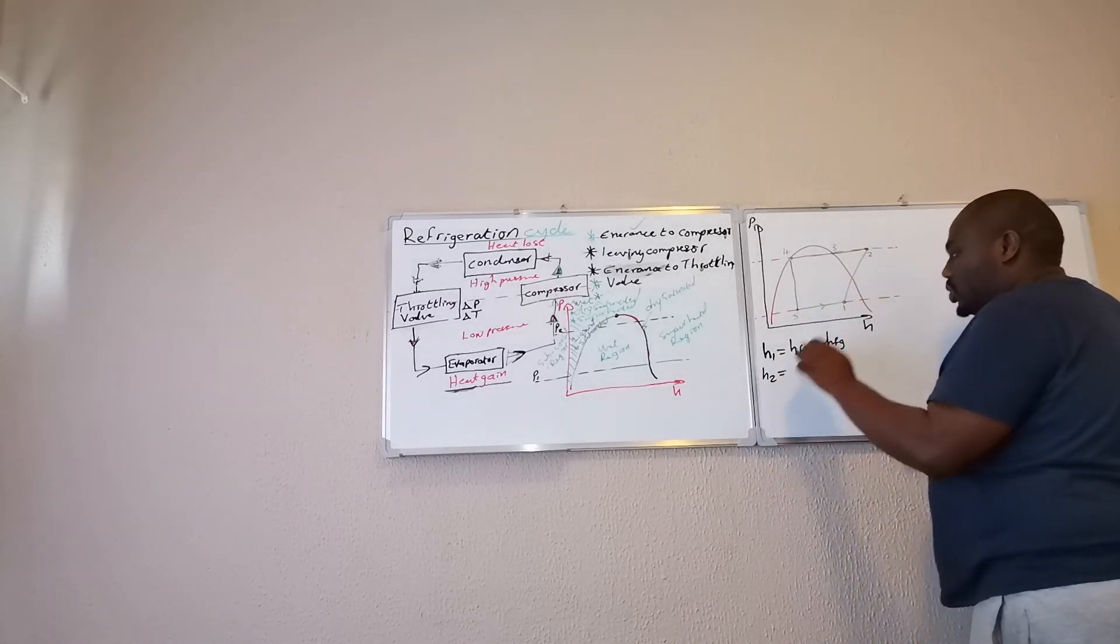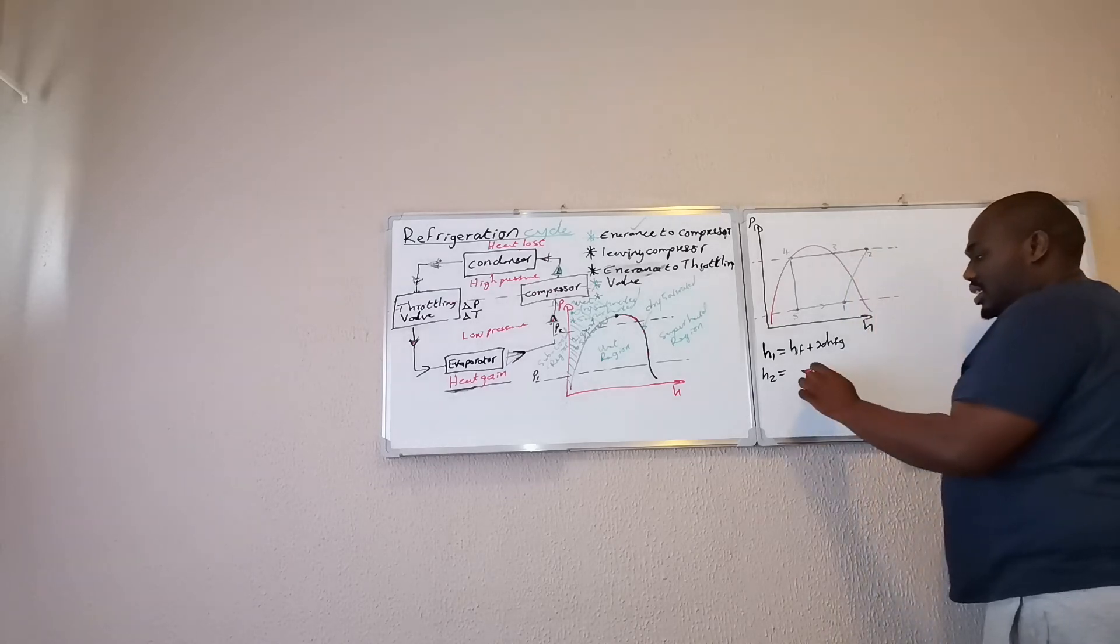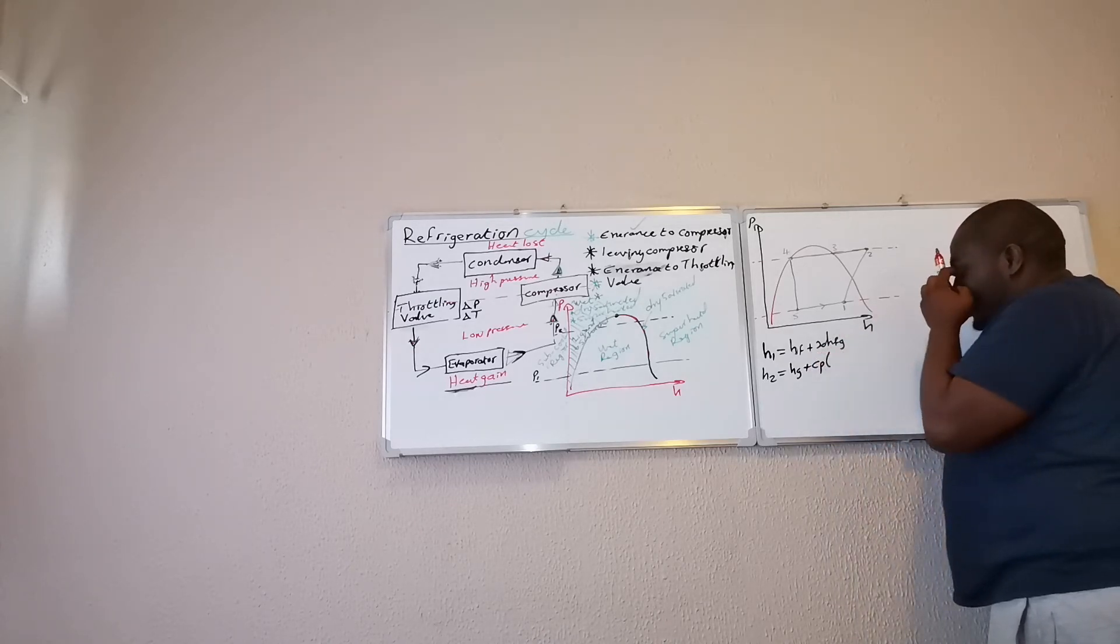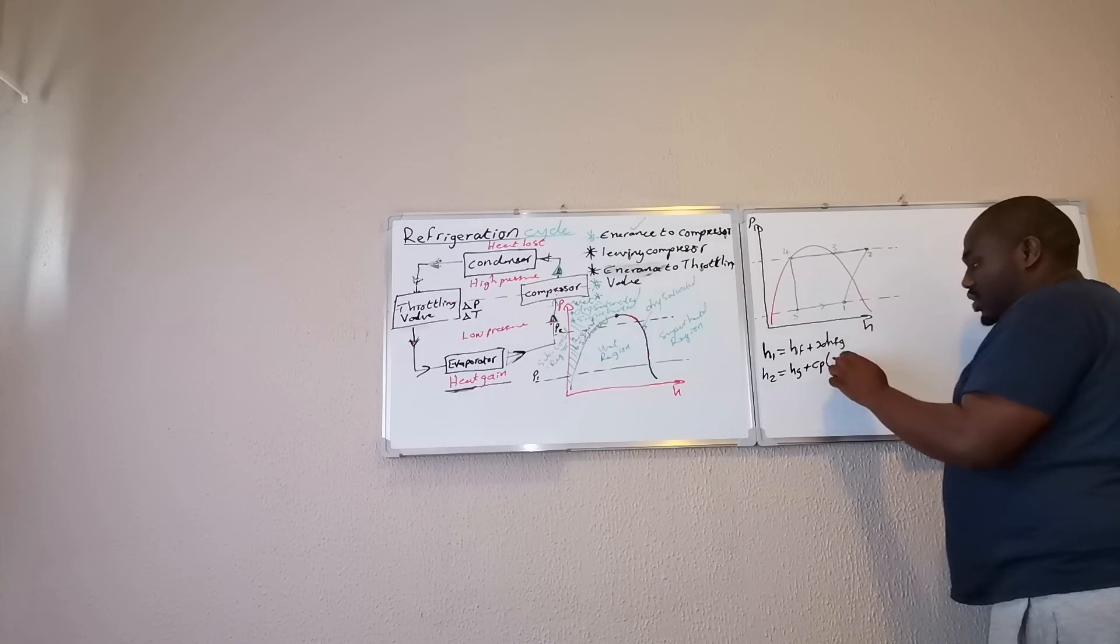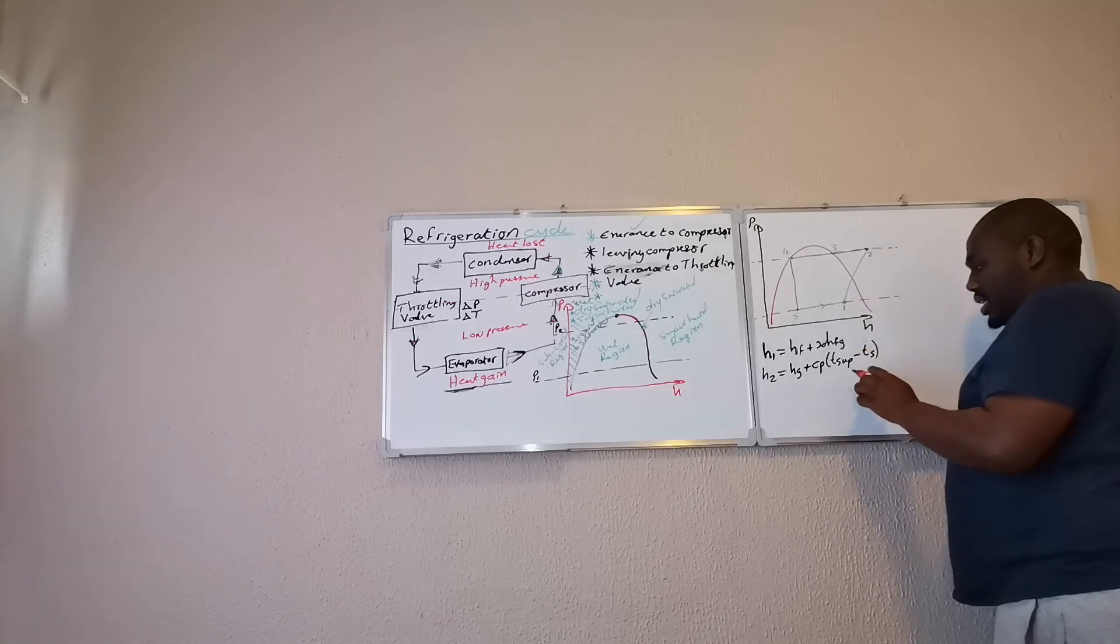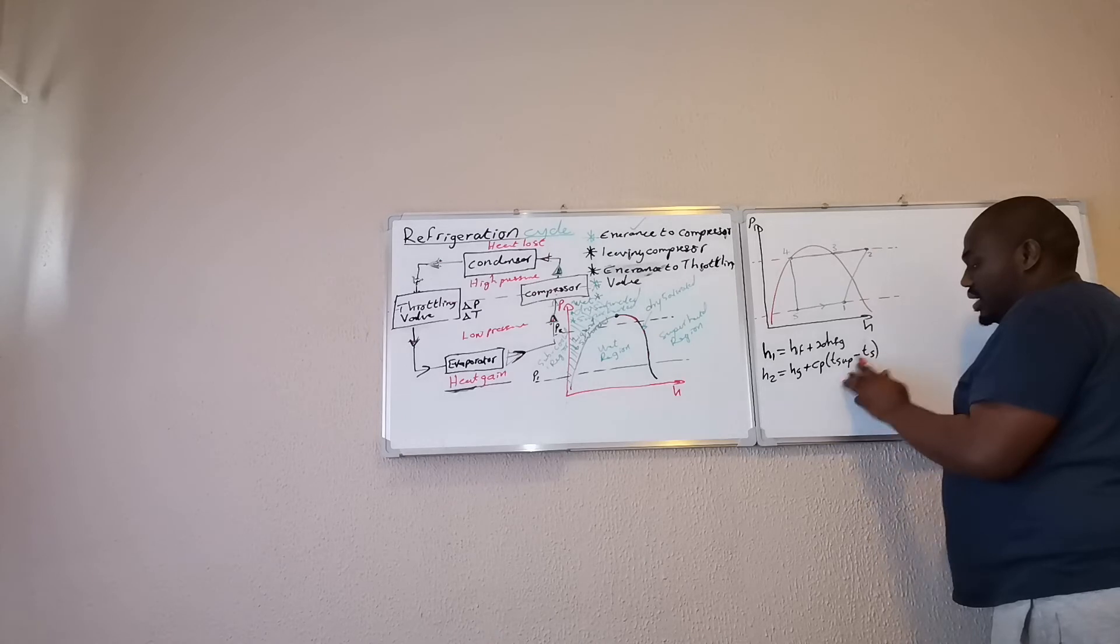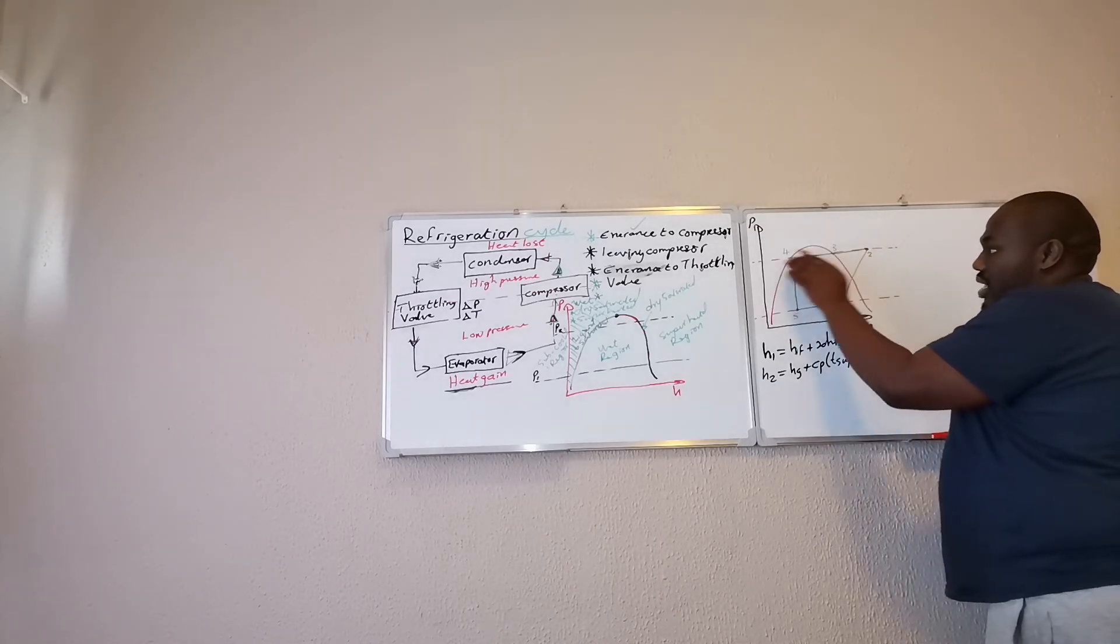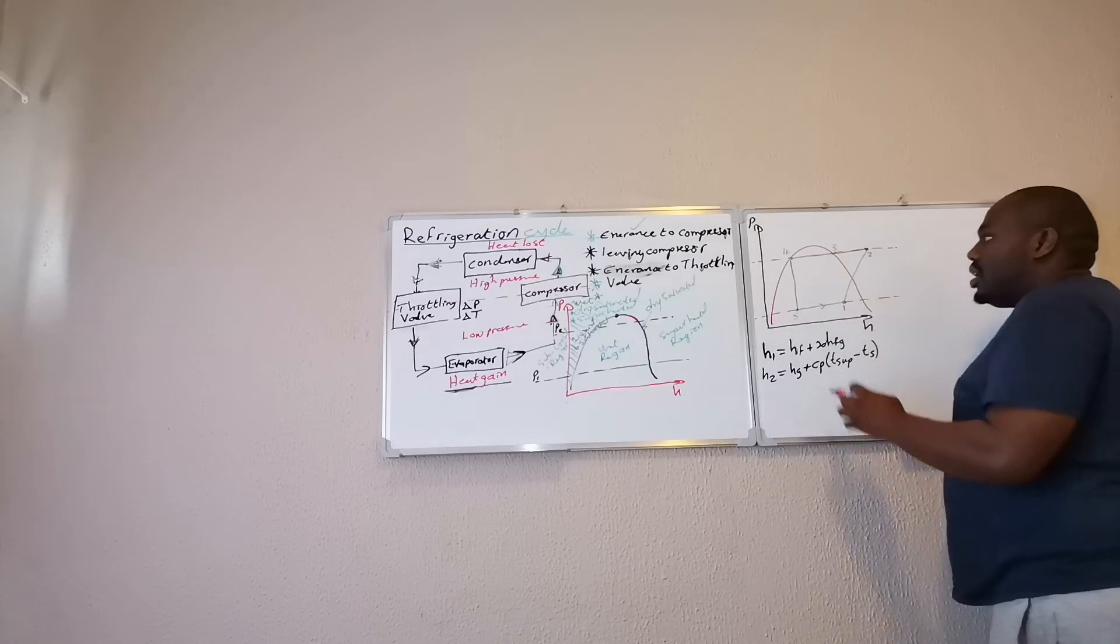H2, H2 is in the superheated region. Therefore, it would be HG plus the specific heat capacity of superheated refrigerant times T soup minus TS. So, this would be the superheated temperature. TS would be the saturation temperature at this high pressure line.